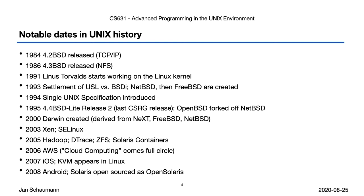At this time, there had already been born two descendants of BSD. NetBSD was first released in March of 1993 with a focus on portability and technical correctness, and FreeBSD was first released in December of 1993 with a focus on the new i386 platform.